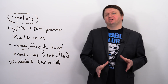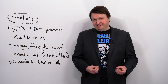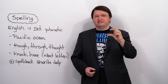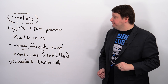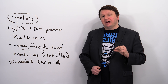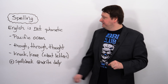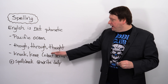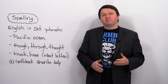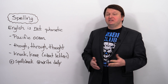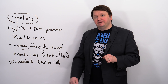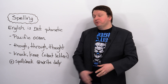Spelling. Spelling is difficult in English because it is not phonetic. This means that every letter in the English alphabet does not line up to one sound. For instance, every C in 'Pacific Ocean' is pronounced differently — it is not phonetic. And 'though,' 'through,' 'thought' — the O-U-G-H is pronounced differently in all three of those words. Not phonetic. You also have the problem of silent letters like 'knock' and 'knee.'